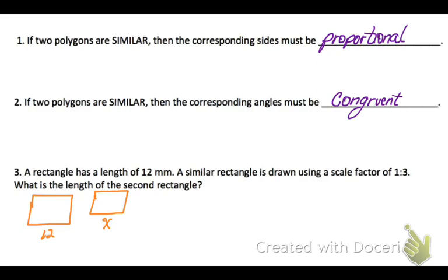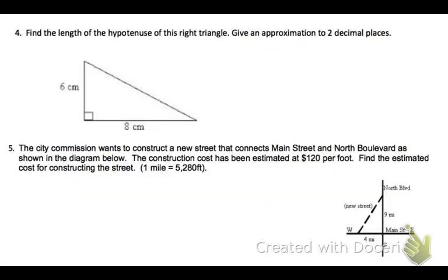I just don't know how big that side is. So, I can set up a proportion and say x over 12 equals 1 over 3. Cross multiply, divide, and get that x equals 4 millimeters. Another way to solve this would be to take 12 times one-third. You're going to get the same answer. Make sure you're using units.